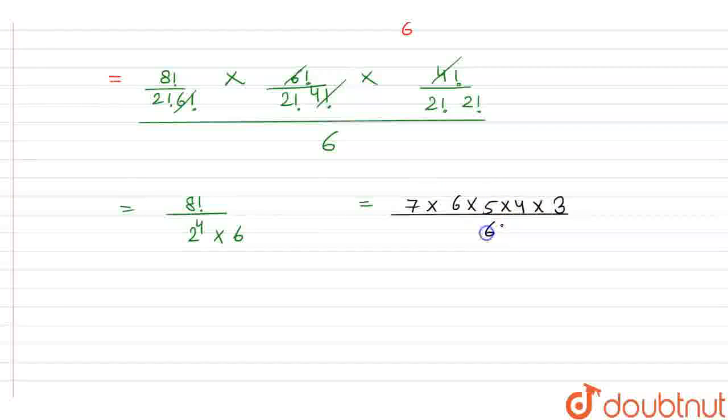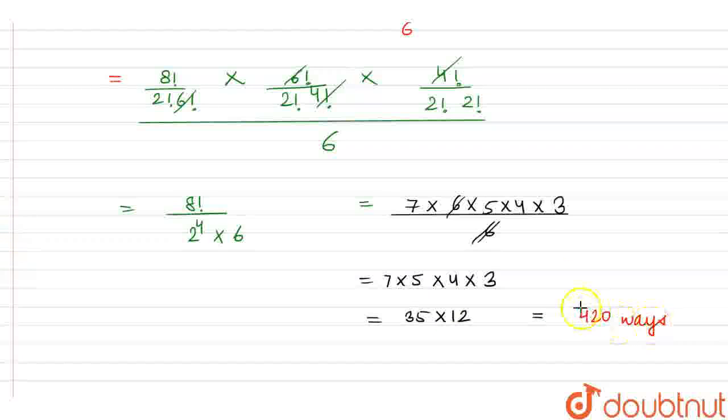So we are left with 7 into 5 into 4 into 3 which gives us 35 into 12 and this is equals to 420 ways and hence this is our final answer.